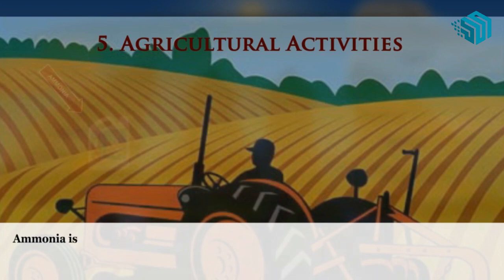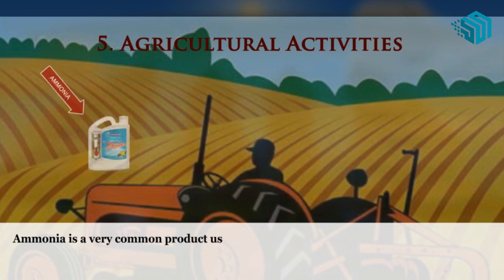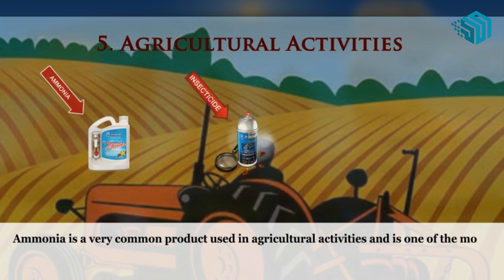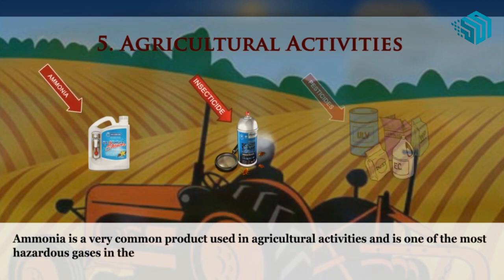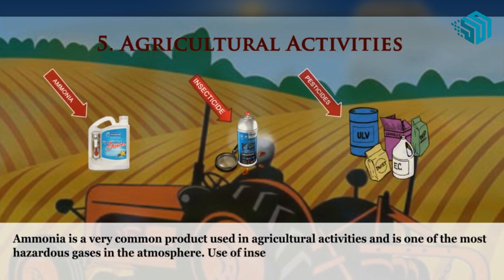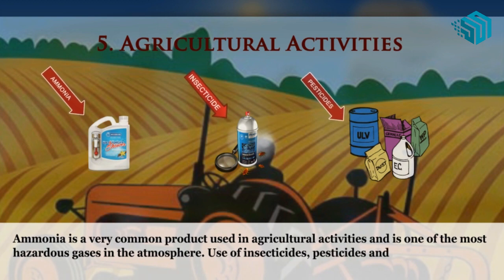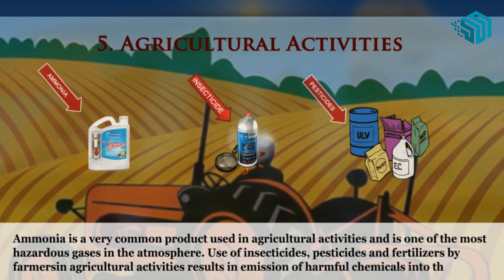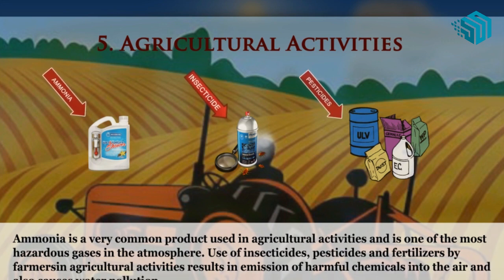Ammonia is a very common product used in agricultural activities and is one of the most hazardous gases in the atmosphere. Use of insecticides, pesticides and fertilizers by farmers in agricultural activities results in emission of harmful chemicals into the air and also causes water pollution.